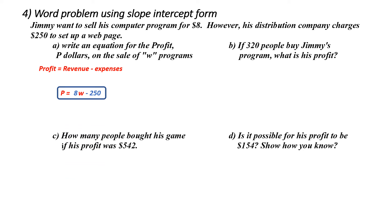Part B: if 320 people buy Jimmy's program, what is his profit? I start with my equation and replace w with 320. I multiply 8 times 320, giving me 2,560, and then subtract 250, which gives me a profit of $2,310.